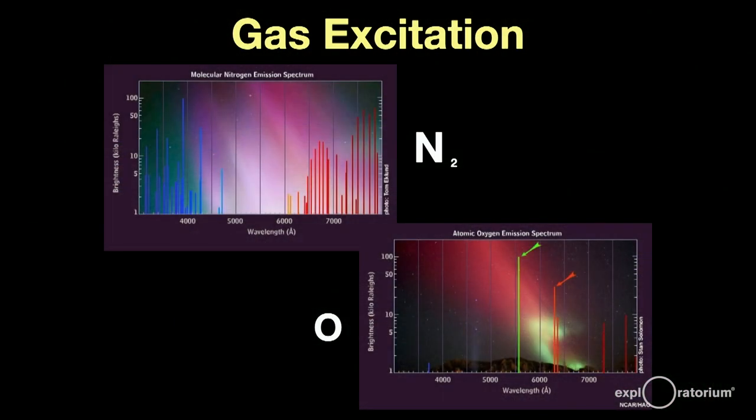Like lightning, you can look at the spectra of aurora and analyze their atmospheric gases, which not unexpectedly include nitrogen and oxygen.